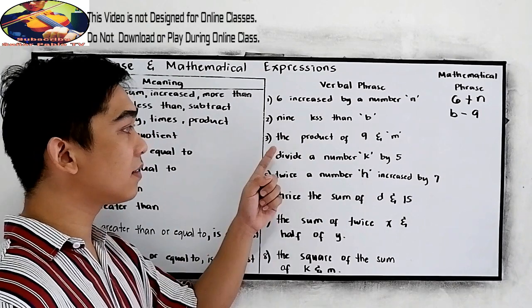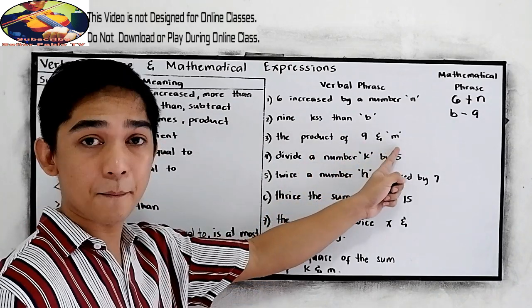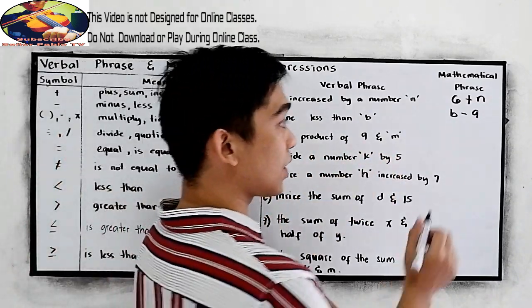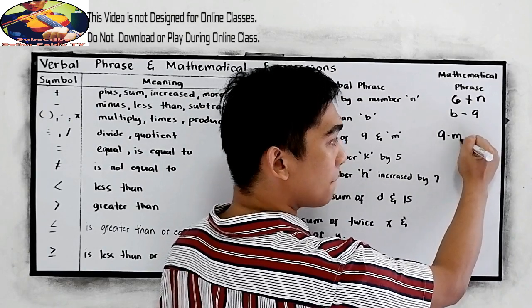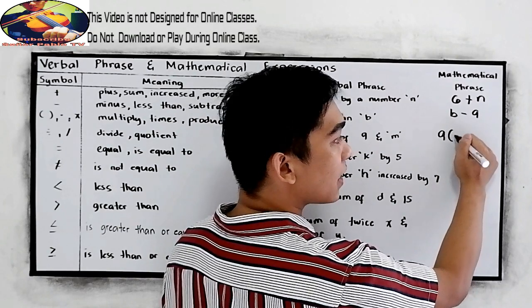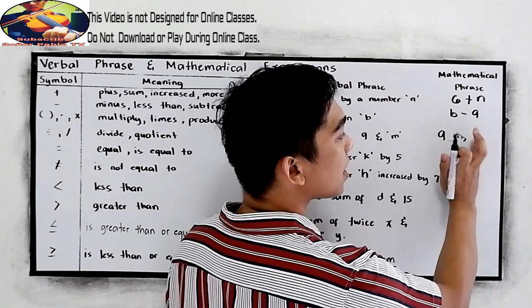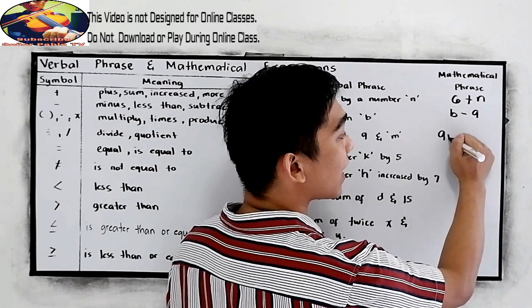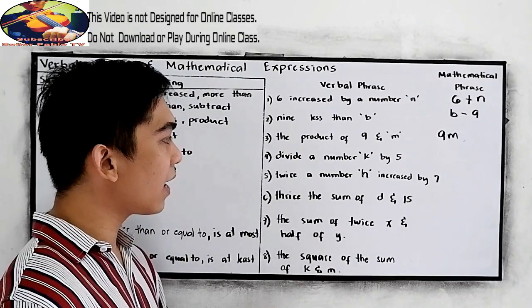And number three, the product of nine and m. So, product. It can be nine times m, or it can be nine times m, or simply 9m.